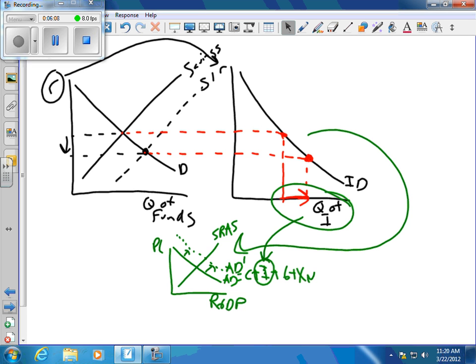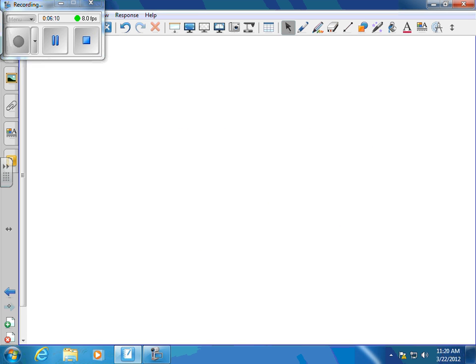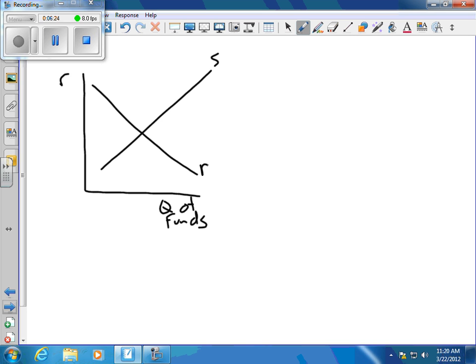On the other hand, what they sometimes use this graph for is they want to maybe illustrate crowding out. So you have quantity of funds here, you have the supply of funds, the demand of funds, and you have your investment demand curve because you've been trained to do so. Anytime you draw an interest rate graph, you put this right next to it - there's your investment demand.